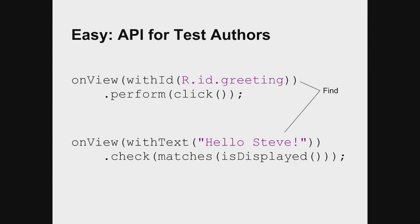This is how our API looks. The entry point to testing is onView — it's just a static method, and you pass it a Hamcrest matcher for the view. UI Automator has a similar pattern. We decided not to write our own stuff and reused the wonderful Hamcrest matcher library. We have some pre-canned matchers like withId and withText, but Hamcrest allows you to write all sorts of complex stuff to find exactly the one view you're going to work with. And then you can do stuff, and you can check. That's our API.